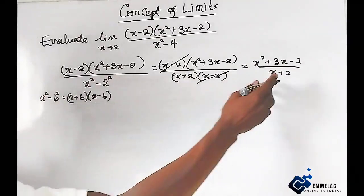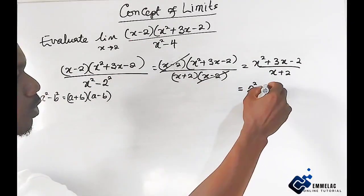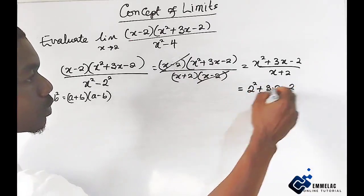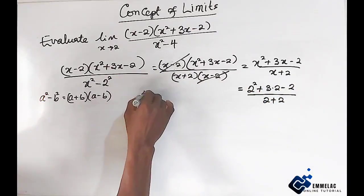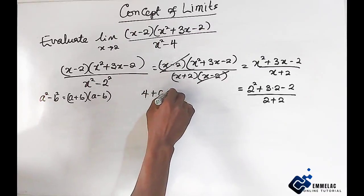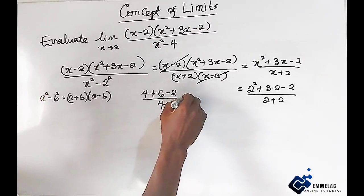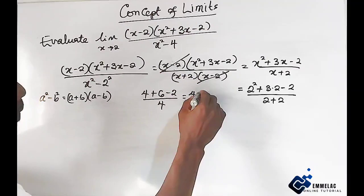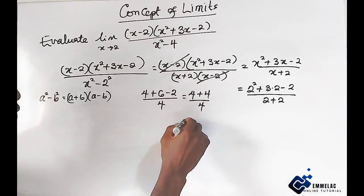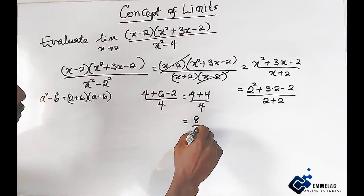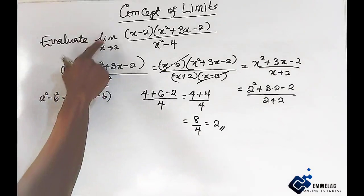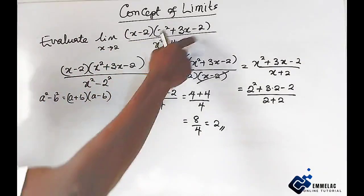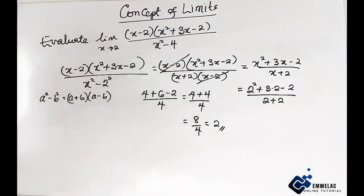Now let us plug in 2 for x in this expression. We have 2 raised to the power of 2, plus 3 times 2, minus 2, all over 2 plus 2. This gives us 4 plus 6 minus 2, all over 4. That is 8 over 4, which gives us 2 as the final answer. So it implies that as x approaches 2, this whole expression also approaches 2.